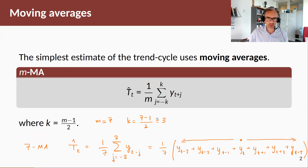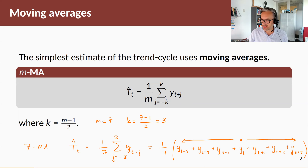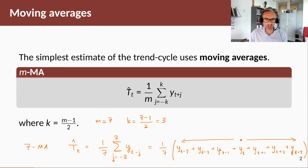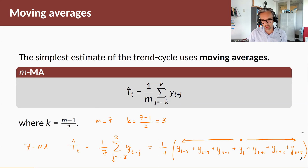The easiest way to understand this is to apply an example. Suppose we want to perform a moving average of order 7 — then k will equal 3, and hence our estimate of the trend at time t will be an average between three observations prior to time t and three observations post time t. So an average of all seven observations.